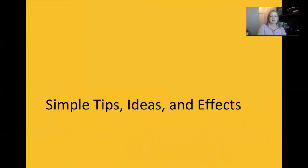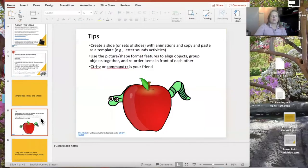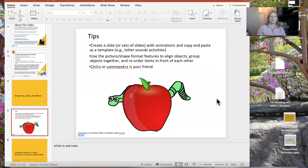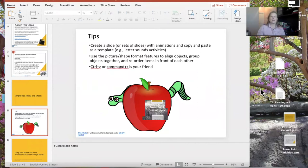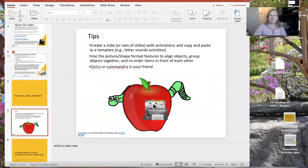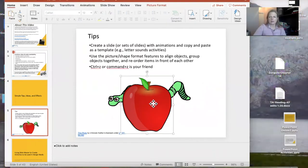I'm going to start with some simple tips, ideas, and effects. The first thing I want to talk about is getting your graphics in the format where they will line up and you can add animations to them. There are a few little tricks that help you do this easily. I remember spending a long time years ago trying to line up things and make them all even and aligned — but there are features built in that do that for you. For example, I have my apple and my worms that I've already acquired from the internet.